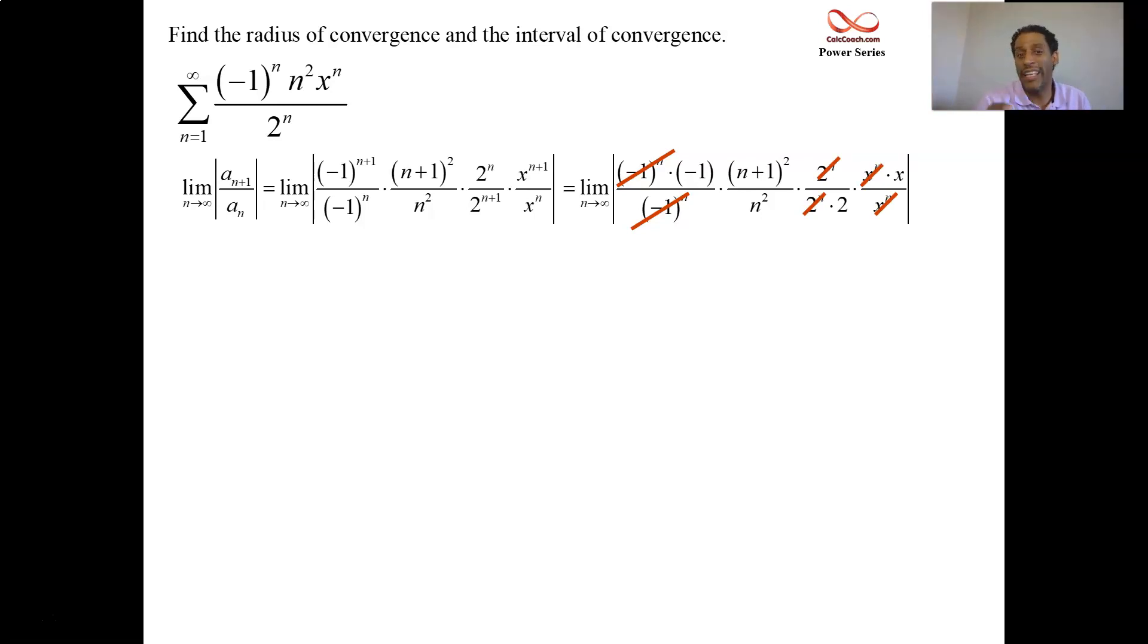So as far as this n plus 1 quantity squared over n squared, that limit is a 1. You know, the numerators are quadratic with a coefficient of 1. The denominators are quadratic with a coefficient of 1. So yeah, that goes to 1. And when it's all said and done, after all of that, what's left? Negative x over 2. It's inside of absolute value bars. That's the result of the ratio test. That's the capital L. But we want convergence, so we force this to be less than 1, and we solve that inequality.